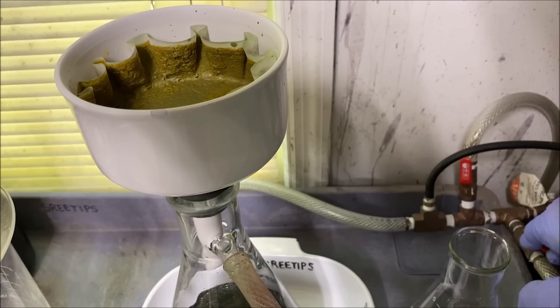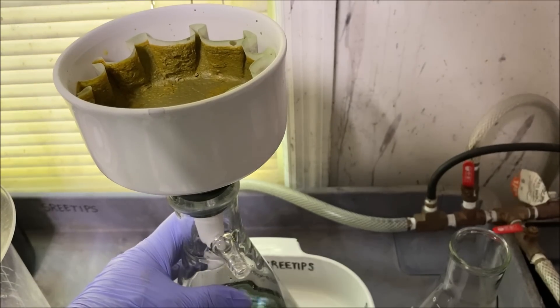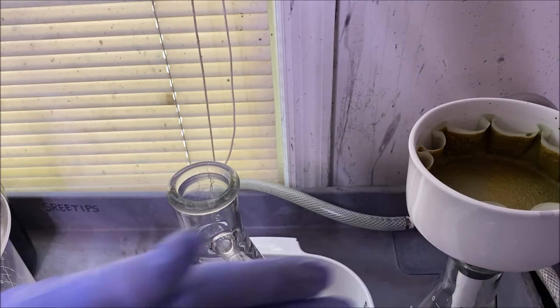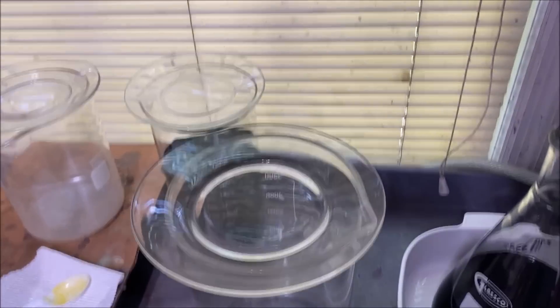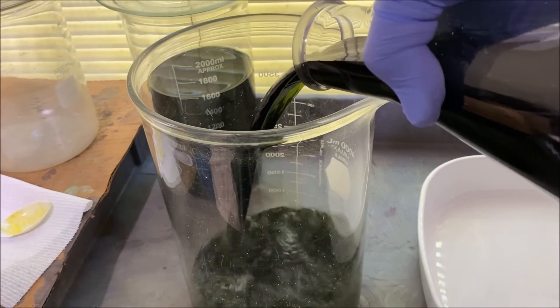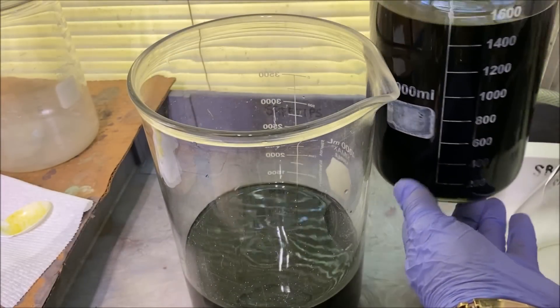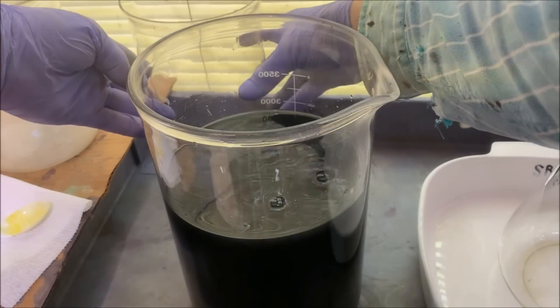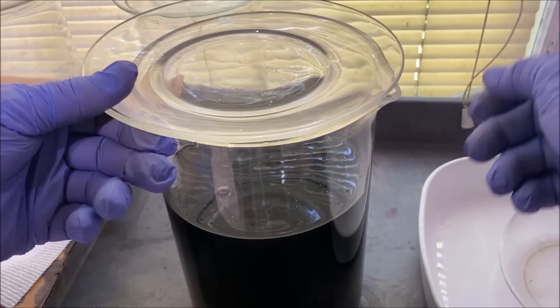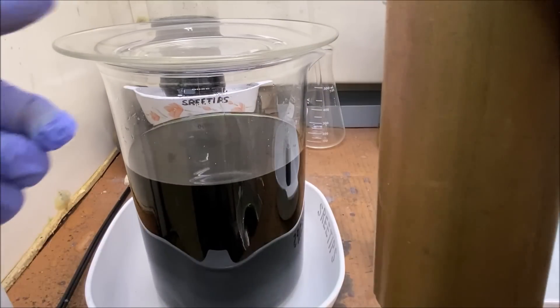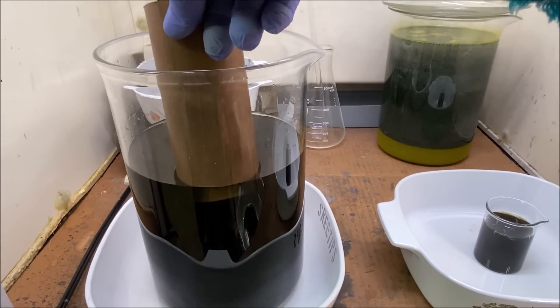Turn the vacuum off and pull our funnel. There's our filter. Now what we'll do is I'm going to add the solution to this large beaker. I've got a piece of copper here. I'm just going to go ahead and cement the silver out of this solution carefully.